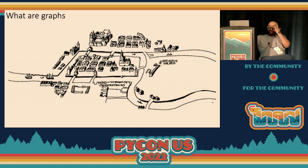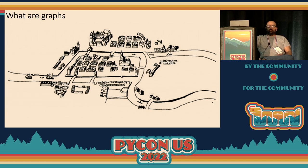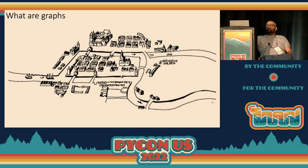People who are familiar with graphs may recognize this map of the city of Königsberg. That's a classic problem in graph theory that presented a city separated by a river, with two land masses in between — so four land masses connected by seven bridges. The question was: can you take a tour of the city and cross each bridge exactly once?